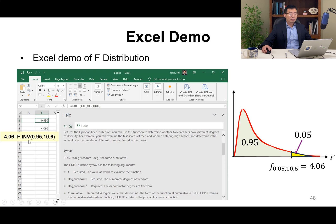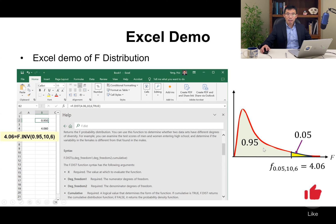We can also use F inverse in Excel: you give it a probability and the numerator and denominator degrees of freedom, and it returns the location. Since the Excel function is left-tail, always use the left-tail area. There are two Excel functions: F distribution, where you give the location and it finds the probability; and F inverse, where you give the probability and it finds the location.